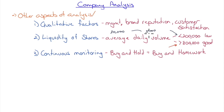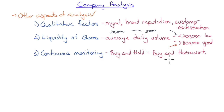If you can only sell 1,000 to 1,500 shares a day without affecting the price, and you have 30,000 shares to sell, it could take nearly a month to exit the position. Getting in is one thing — getting out is another. Finally, continuous monitoring is essential. Buy-and-hold is more like 'buying homework.' Just because you own a stock doesn't mean the analysis done four years ago is still valid — fortunes change, sometimes quarter by quarter.